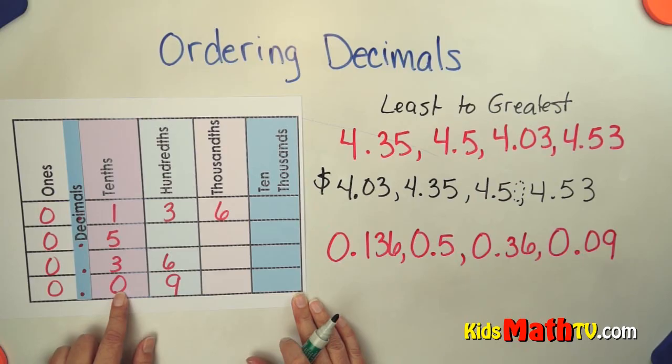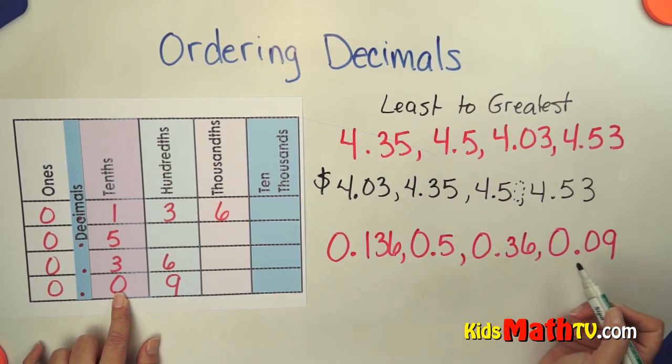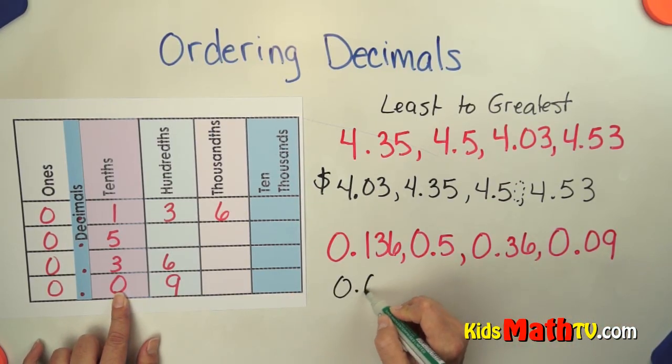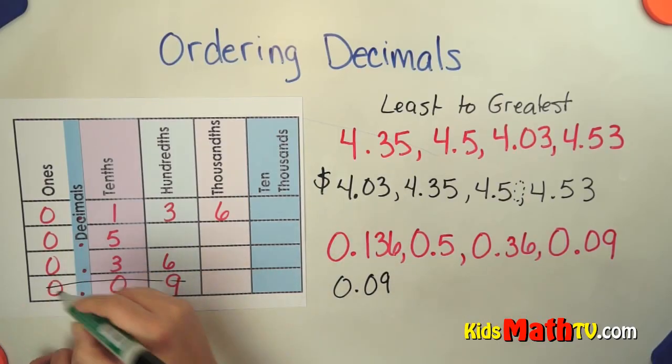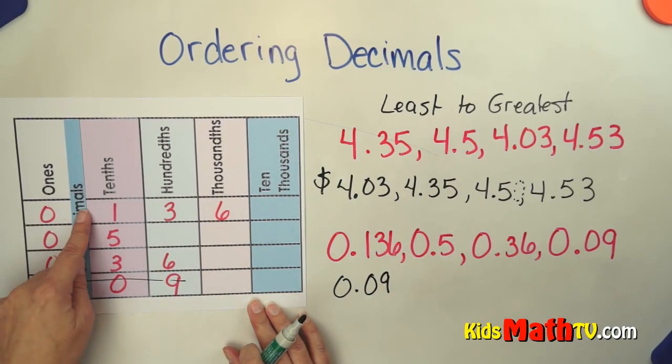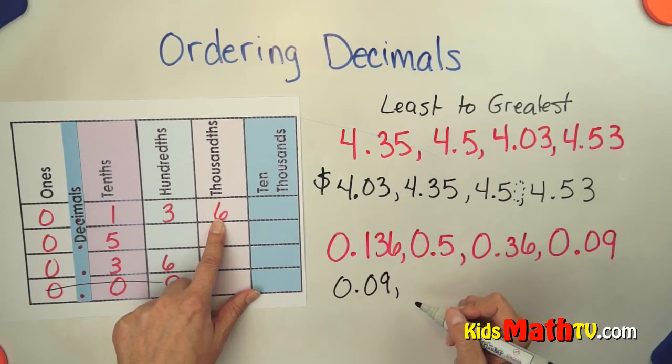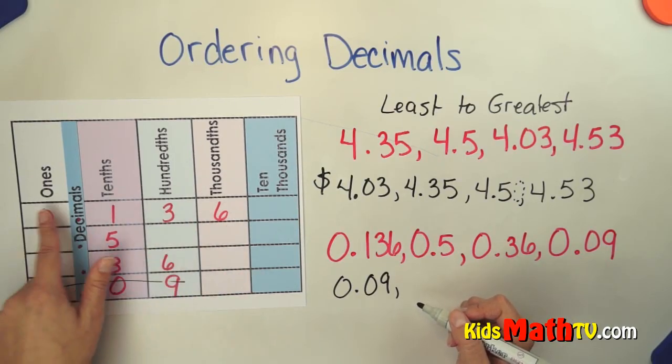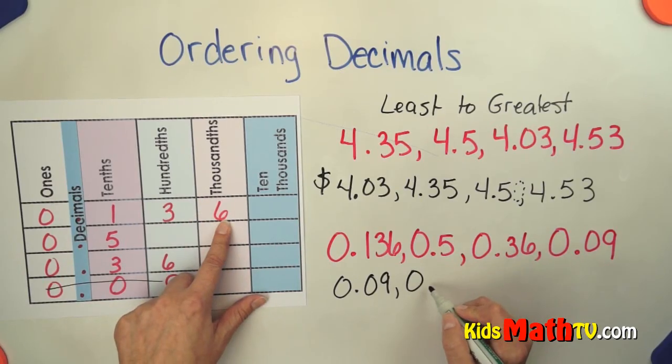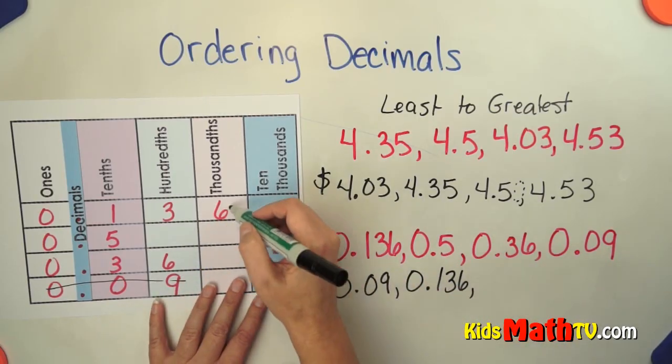What's my smallest tenths? Zero is. So my smallest number is zero and nine hundredths. My next smallest tenths is a one. So this is my next largest number: zero and one hundred thirty-six thousandths. Cross that out.